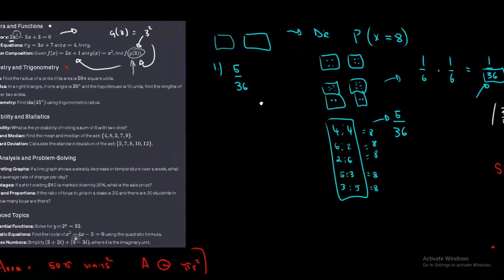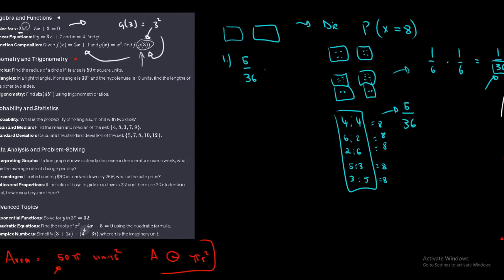Therefore, the probability is 5 out of 36. If they ask for a percentage, multiply by 100 to get 5/36 times 100, which gives approximately 13.9%, or about 14% rounded to the nearest percent.